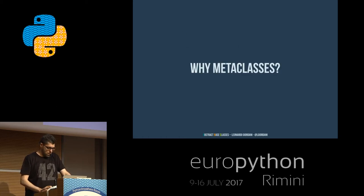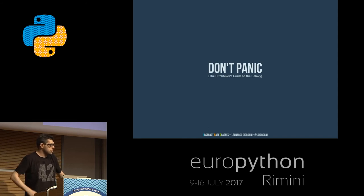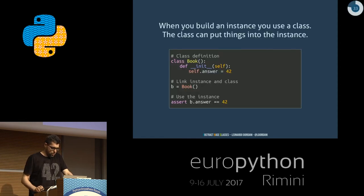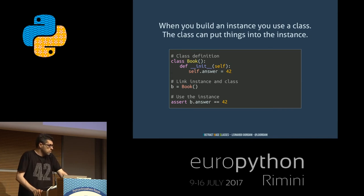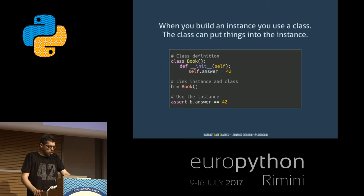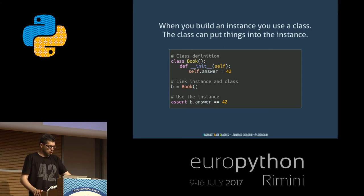Why meta-classes? Don't panic. Meta-classes are used by Python programmers to scare children — I want to show you they are not complex, not more difficult than classes. I have a simple Python code: a class definition, an instantiation, and a use of that instance. Book is a class that defines just one attribute, answer = 42. When I instantiate Book, I can use the instance and say 'give me the answer' and the answer is 42.